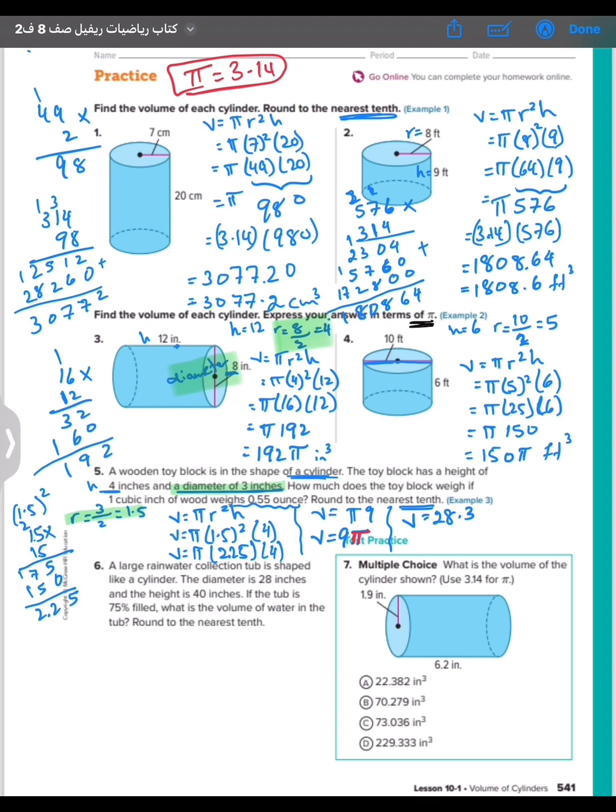They want how much does the toy block weigh if one cube weighs 0.55? So I will multiply pi times 0.55. The answer will be 15.6.